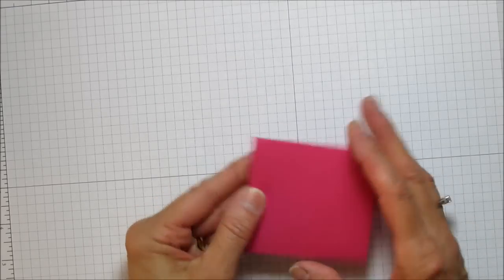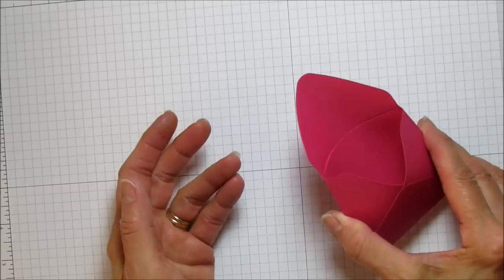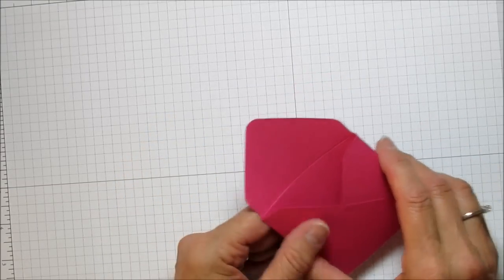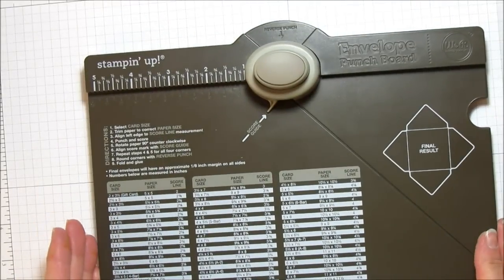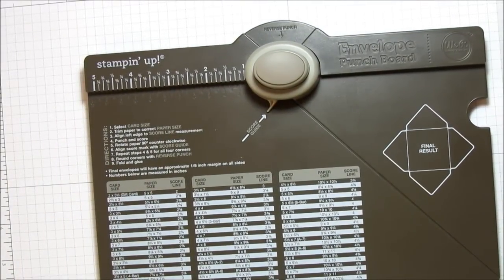I just stick fast fuse on here and I seal it and it stays really well. So that's the envelope, super easy and super quick with the envelope punch board. I'm going to bring this back up and to do the box we're going to do it a little bit different.